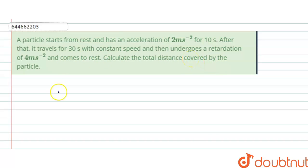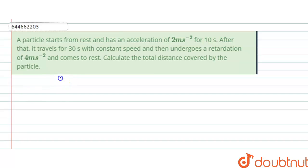For this question, we first draw a pictorial representation for pattern study. We draw two axes — one axis is for velocity (v) and the other axis is for time.